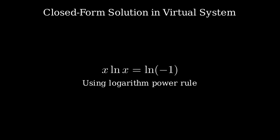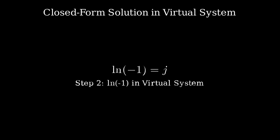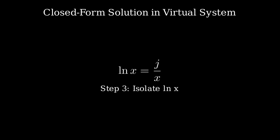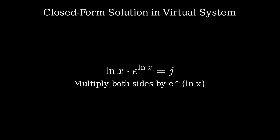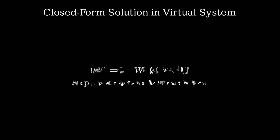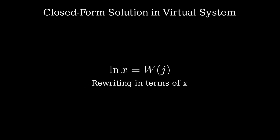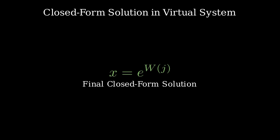We go back to our equation: x times the natural logarithm of x equals j. To isolate the logarithm, we divide both sides by x, giving us natural logarithm of x equals j divided by x. Now, multiplying both sides by e raised to the power of the natural logarithm of x, we get natural logarithm of x times e raised to the power of the natural logarithm of x equals j. This matches the form of the Lambert W function, where w times e to the power of w equals j. So applying the Lambert W function, we get natural logarithm of x equals W of j. Finally, solving for x, we exponentiate both sides, giving us x equals e raised to the power of W of j. This is our closed form solution in the virtual number system.